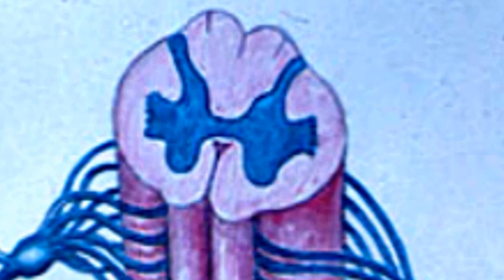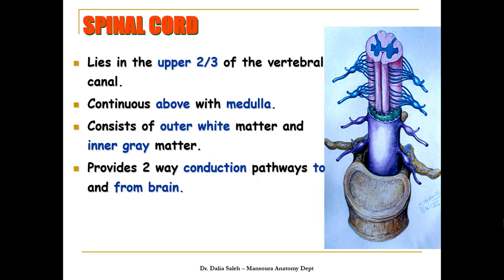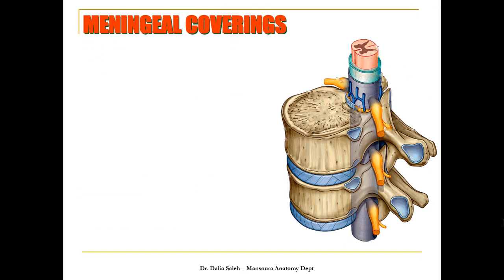The spinal cord lies in the upper two-thirds of the vertebral canal, continuous above with the medulla. It consists of outer white matter and inner gray matter. The white matter contains the myelinated nerve fibers while the gray matter contains the nerve cells and dendrites. The spinal cord provides a two-way conduction pathway to and from the brain, and is also a major reflex center, giving exit to 31 pairs of spinal nerves.